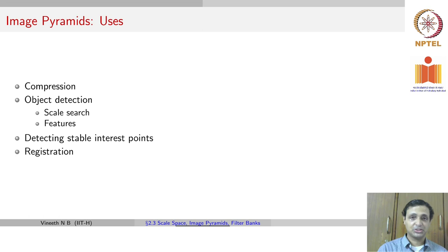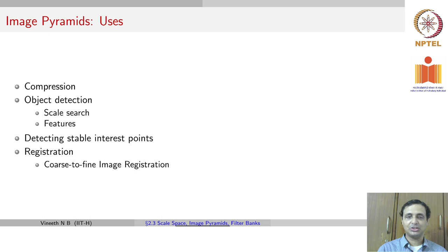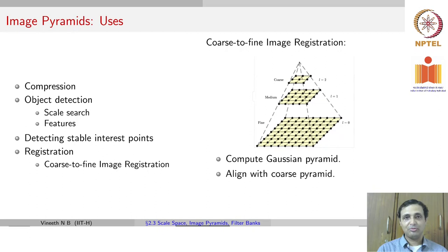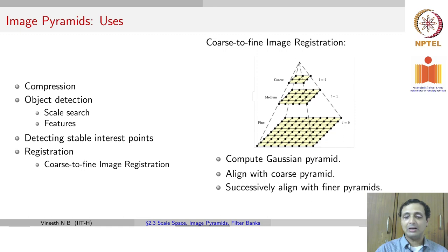Another application is image registration — the process of aligning key points from two different images. You can do coarse-to-fine image registration: construct a pyramid for each image with coarse, medium, and fine levels, align features at the coarse pyramid level first, and then continue successively aligning with finer pyramids by only searching smaller ranges for that final match.